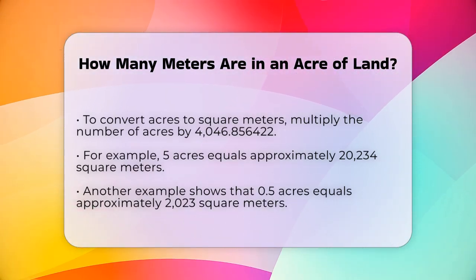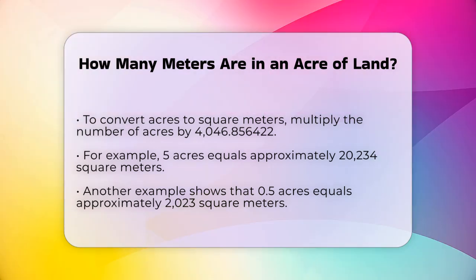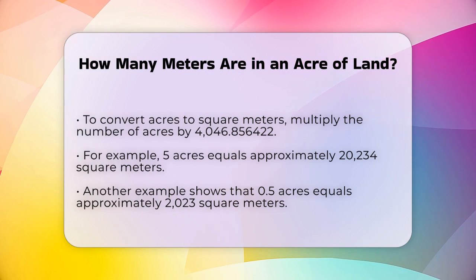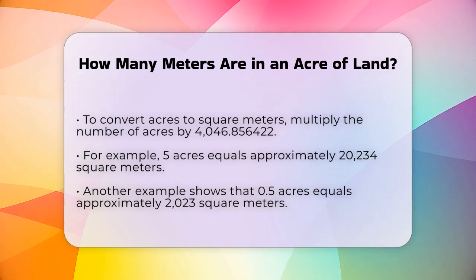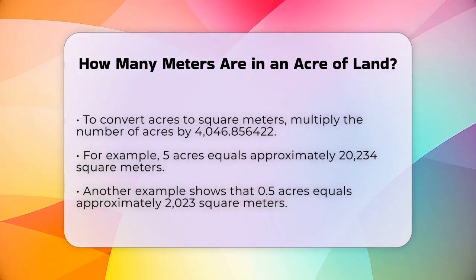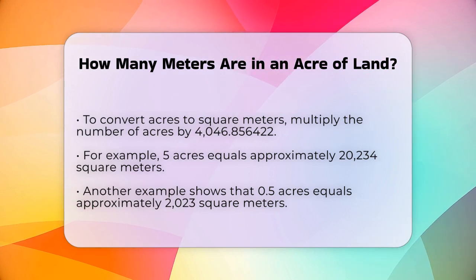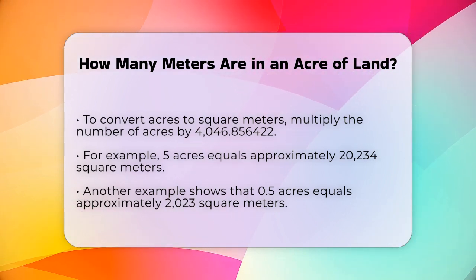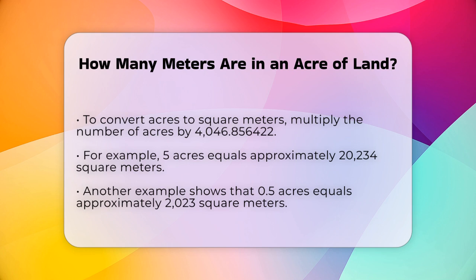To make it even clearer, let's look at another example. If you have 0.5 acres, you multiply 0.5 by 4,046.856422, which gives you 2,023.428211 square meters. So, 0.5 acres is approximately equal to 2,023 square meters.